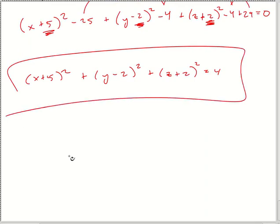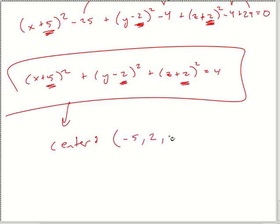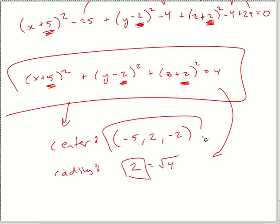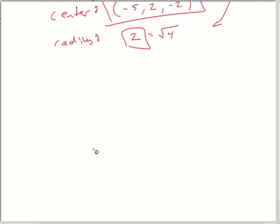The final answer is (x plus 5) squared plus (y minus 2) squared plus (z plus 2) squared equals 4. They also want the center and radius. The center is the inside opposites: negative 5, positive 2, negative 2. The radius is not 4 — it's 2, because it's the square root of 4. The center is always the opposites of what's written inside. This is all just a review from pre-cal with a z-coordinate added.